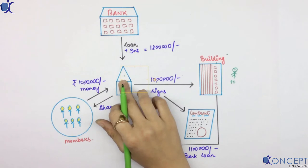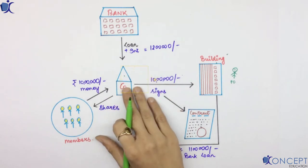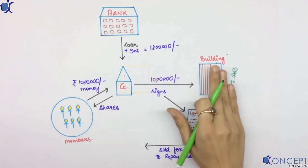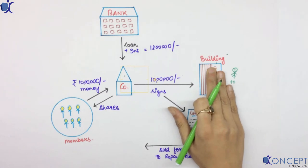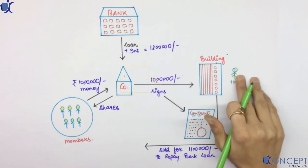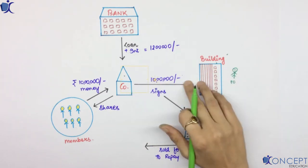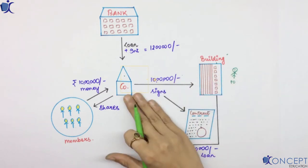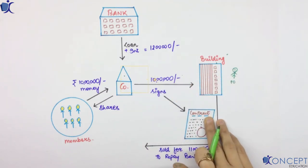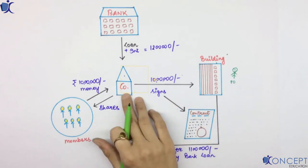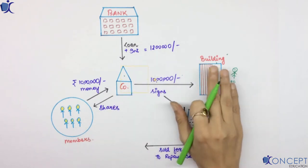The company comes into existence and it gets incorporated. Now the company decided to buy an office building and approaches the previous owner. The previous owner said okay you give 10 lakh rupees and you take the building. Then they signed a contract and the company became the owner of this building.